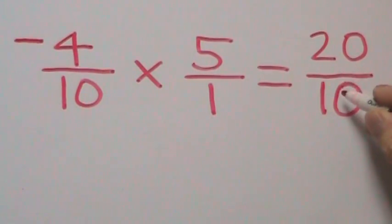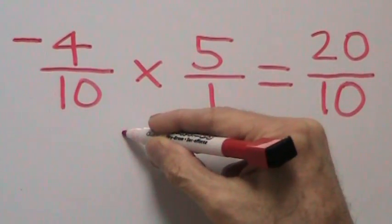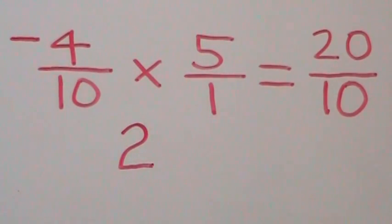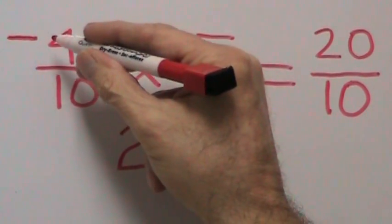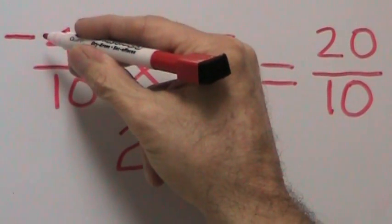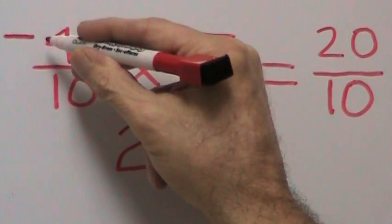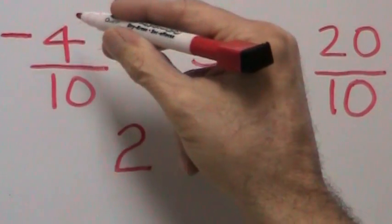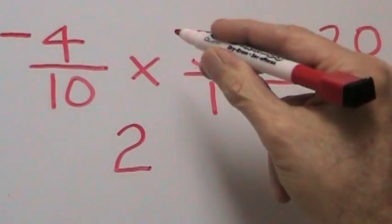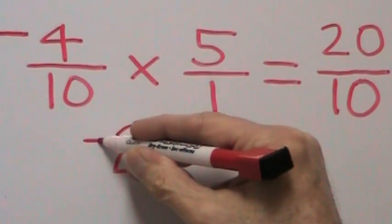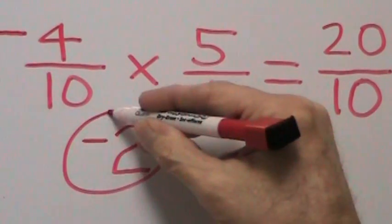We know that 10 goes into 20 two times, so we put down our 2. Integer rules tell us that if we have one number — in this case a fraction — that's negative, or if any odd amount of numbers are negative, then the answer is also negative. So our final answer is negative 2.